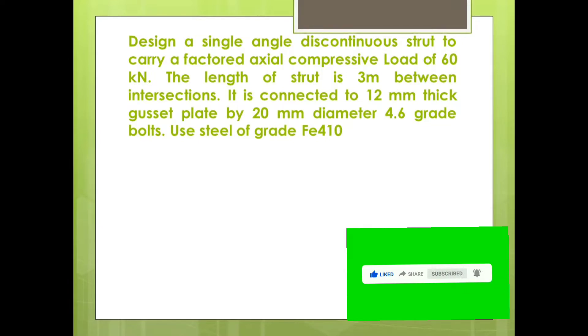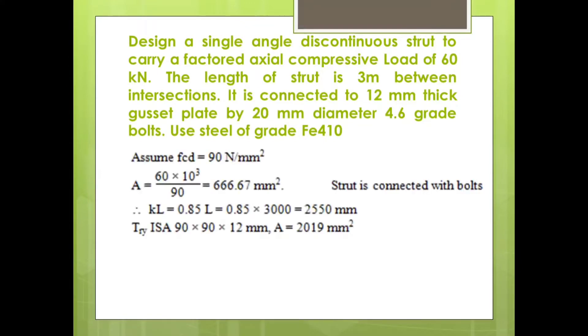This is our problem statement and we have to select suitable angle section from steel table. Now a discontinuous strut is usually found in truss. So this is a truss member. And since this is a truss member, we can start with design compressive stress with a value of 90 newton per mm square. We have seen this in previous section that for a section which is of a truss member, we can assume design compressive stress as 90 newton per mm square.